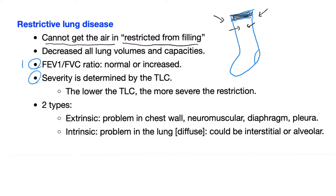Step number two is to determine the severity of the restrictive lung disease. You do this based on the TLC — the lower the TLC, the more severe the restriction. There are two types of restrictive lung disease: extrinsic, where it's not the lung's fault, and intrinsic, where it is the lung's fault.